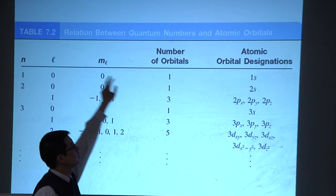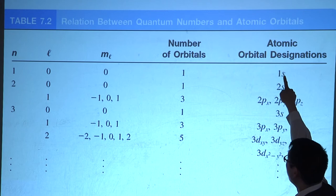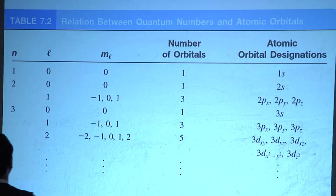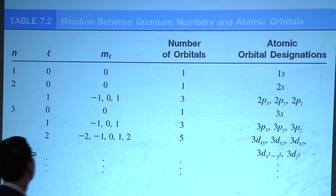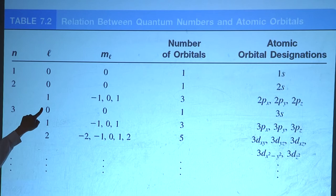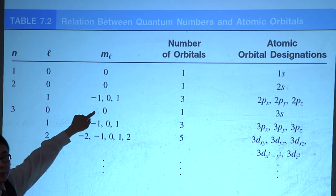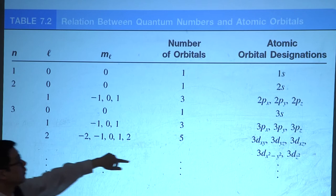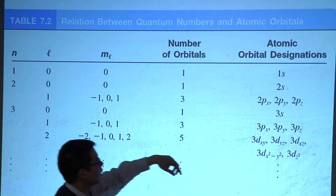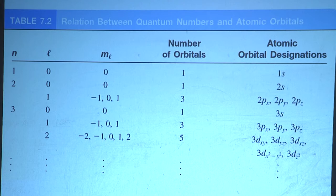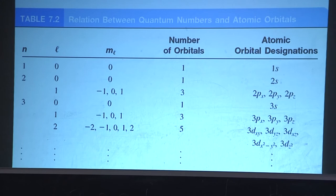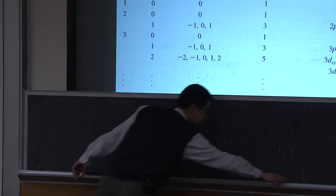Here's a summary. For n=1, l=0 only, m sub l=0 only — one orbital, the 1s. For n=2, l can be 0 or 1, giving 1+3=4 orbitals: the 2s and three 2p's. For n=3, l can be 0, 1, or 2, giving 1+3+5=9 orbitals: the 3s, three 3p's, and five 3d's.